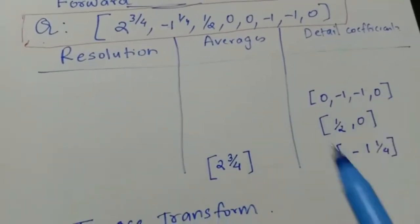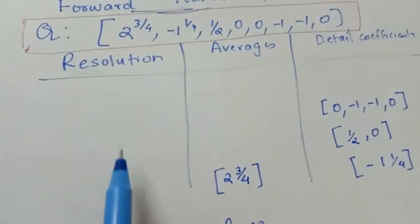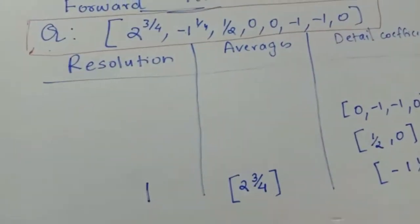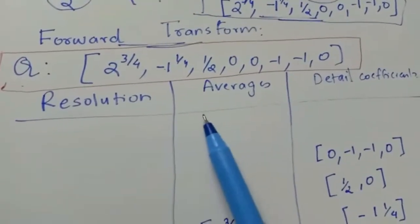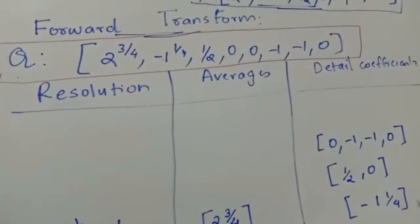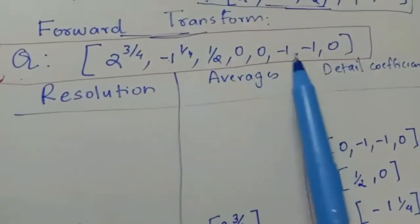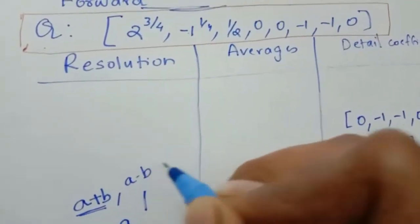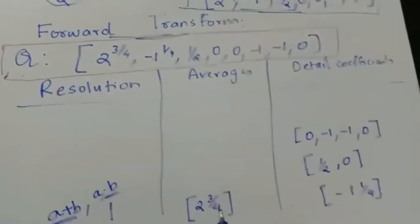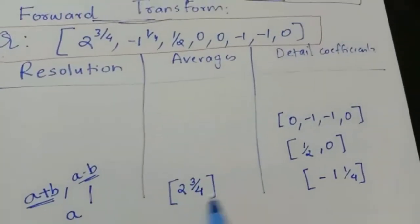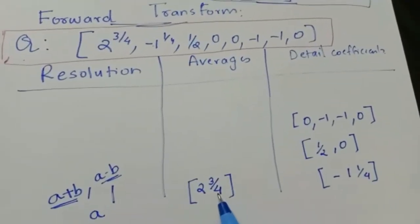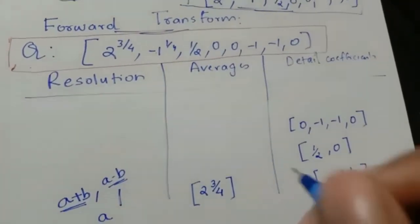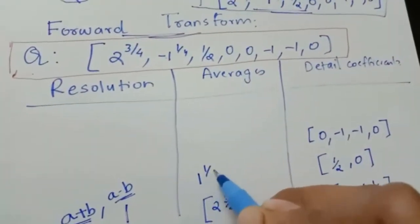For filling the inverse columns, resolution carries the number of elements in the vector — here we have one element, so the entry is 1. For the averages column in inverse transform, entries are A + B and A - B alternately. The first pair is 2¾ and -1¼. So A + B = 2¾ + (-1¼) = 1½, and A - B = 2¾ - (-1¼) = 4. Resolution entry is 2.